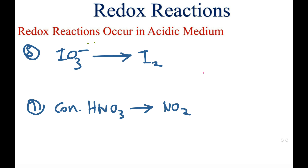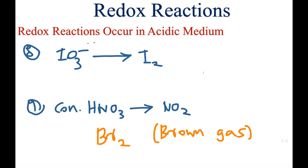In the eighth reaction, IO₃⁻ (iodate ion) becomes I₂ in acidic medium. In the ninth reaction, concentrated nitric acid becomes NO₂. NO₂ color is brown, same as Br₂ gas.